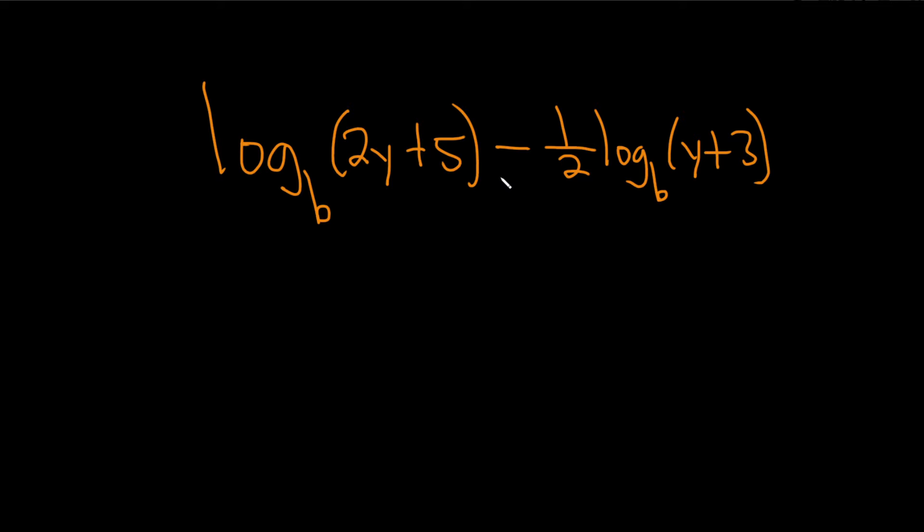Because we have a minus, the rule we're thinking about is called the quotient rule. It says if you have the log base b of x minus the log base b of y, so whenever you're subtracting like this, you can combine them and write it as a single log.